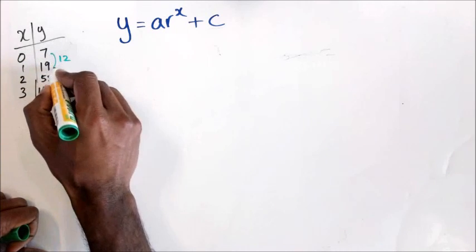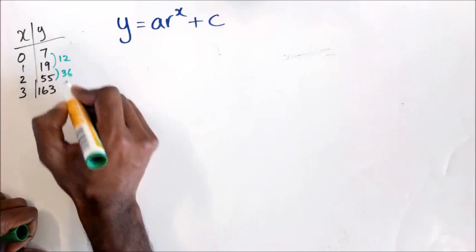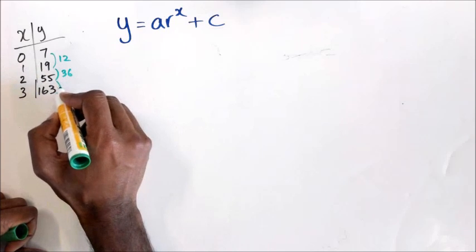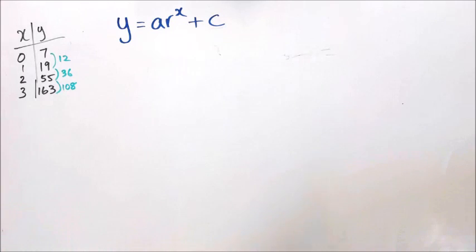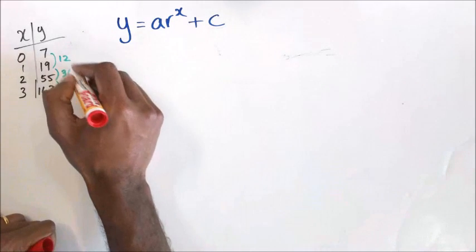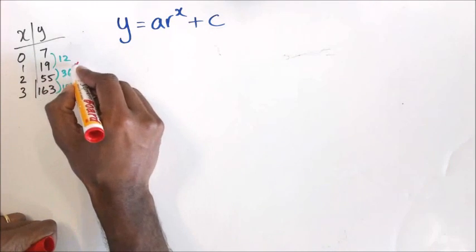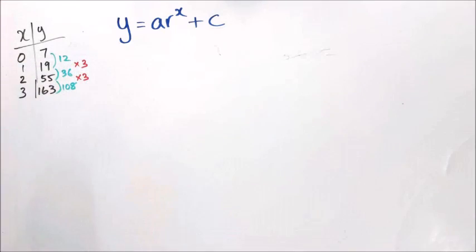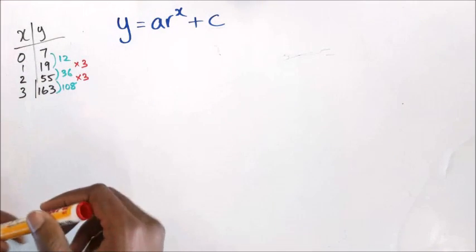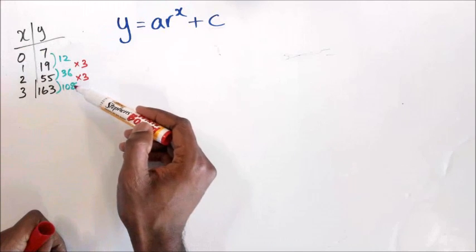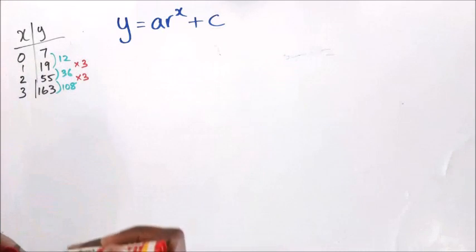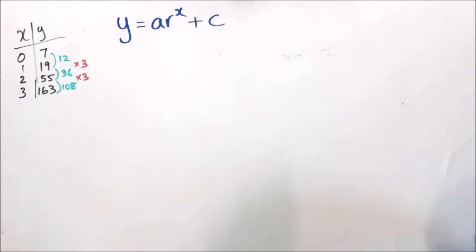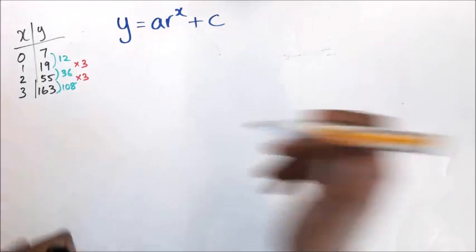Between 7 and 19 you've got 12. Between 19 and 55 you've got 36. Between 55 and 163 you have a difference of 108. These numbers are tripling — multiplied by 3. If you don't see the pattern, just calculate 108 divided by 36, which gives 3, and 36 divided by 12, which also gives 3. That's a quick way of confirming your ratio.